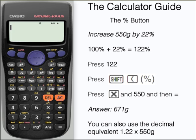If you prefer, you can use the decimal equivalent of 122% or 1.22. You may find this method more convenient.